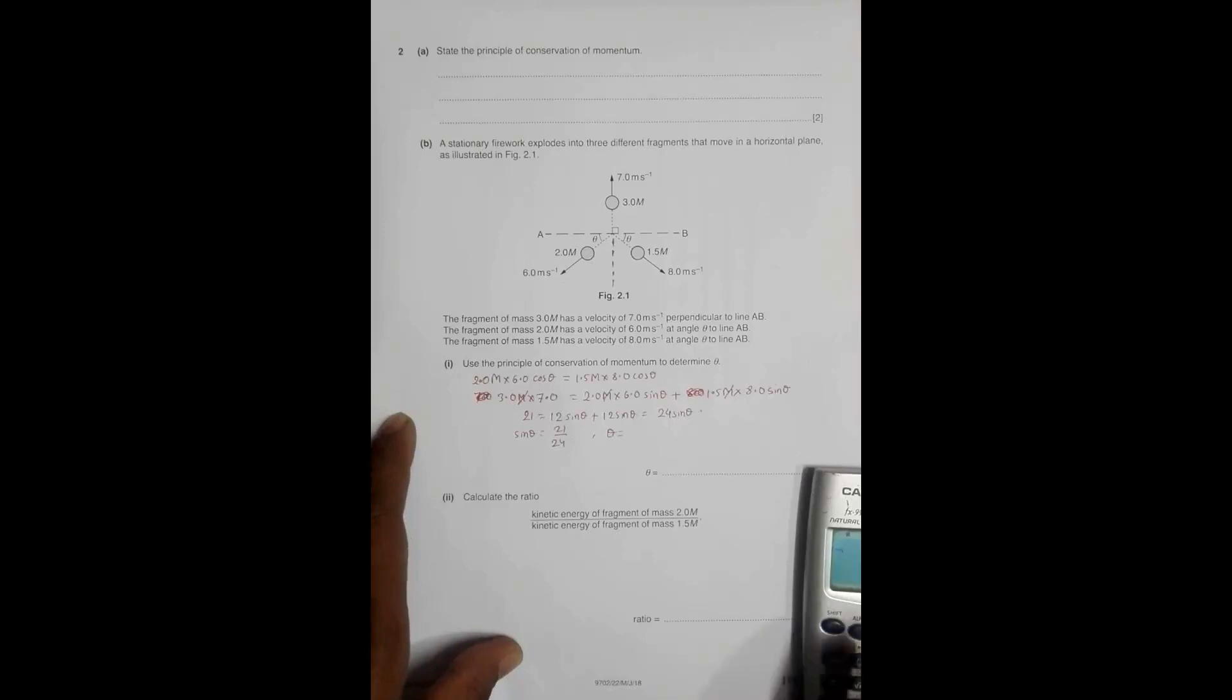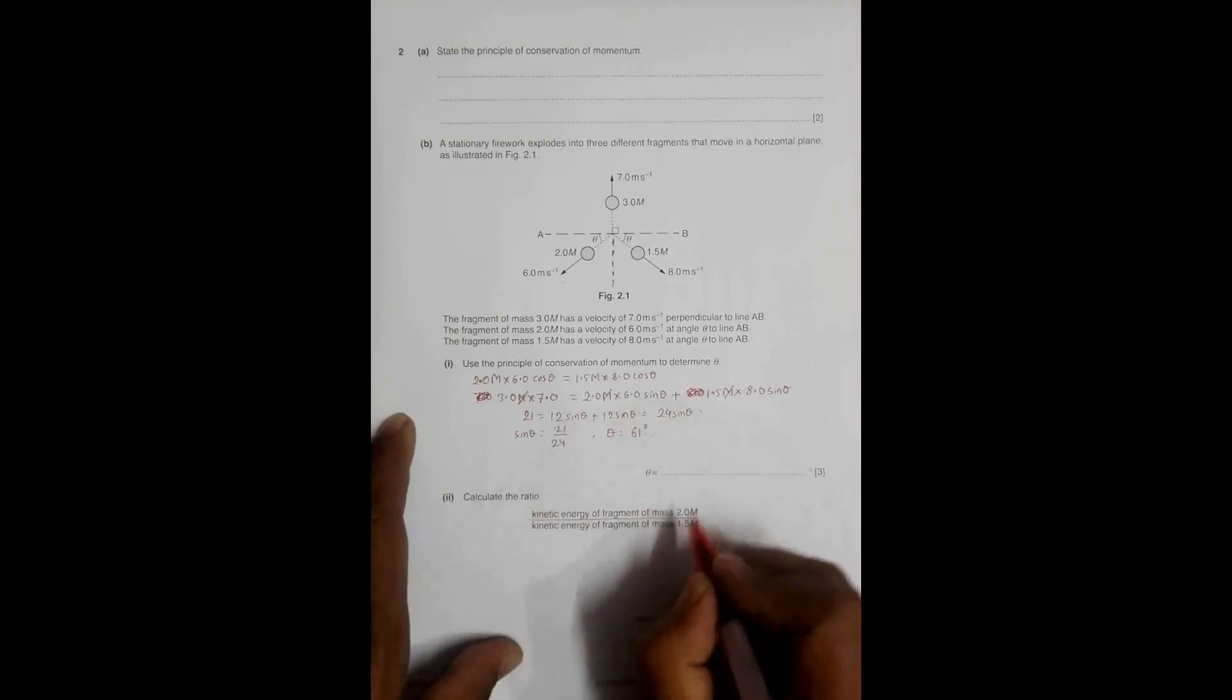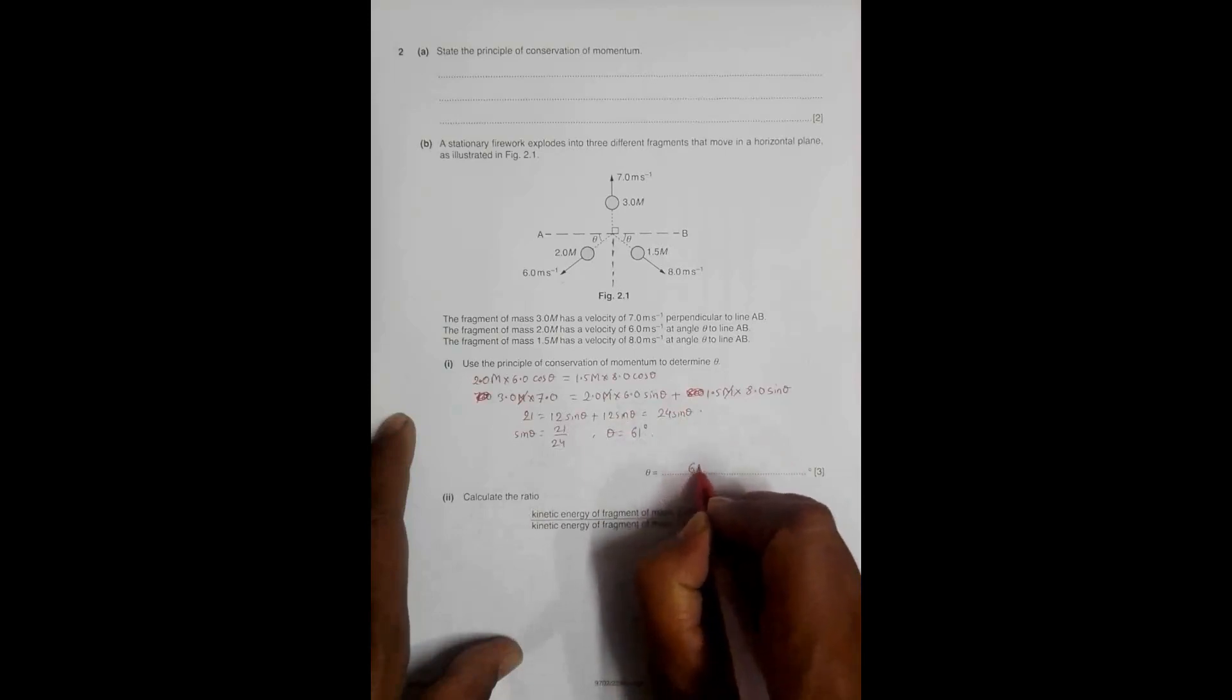So theta is equal to sine inverse of 21 divided by 24, which equals 61.04 degrees. So theta equals 61 degrees.